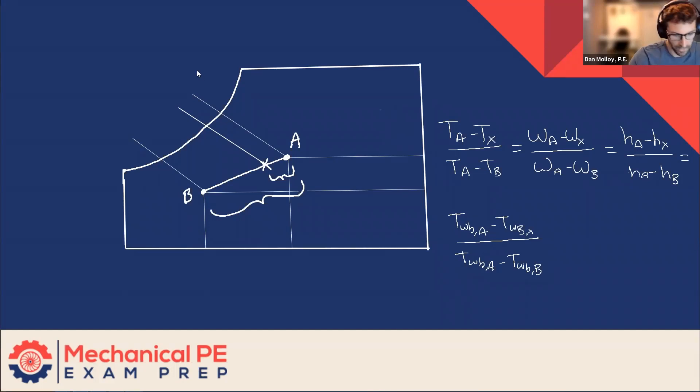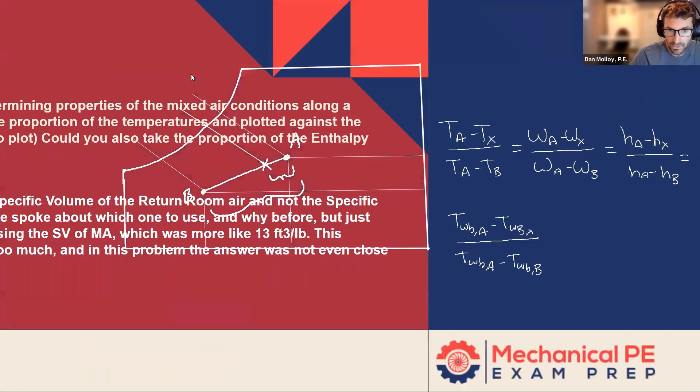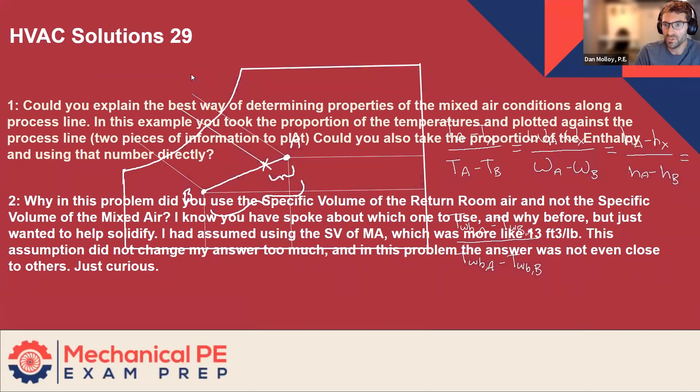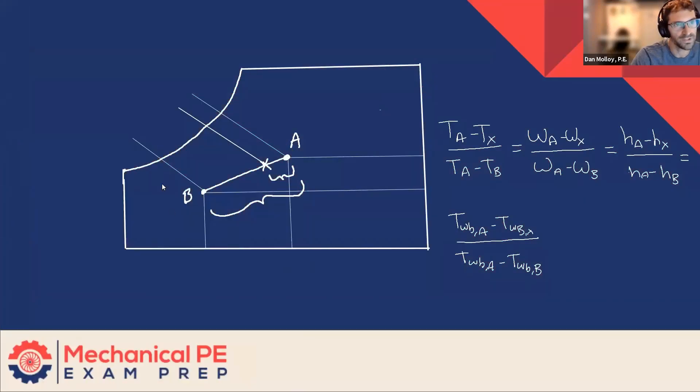And now the second part of the question. Why in this problem did you use the specific volume of the return room air and not the specific volume of the mixed air? I know you've spoke about which one to use and why before, but just wanted to help solidify. I had assumed using the specific volume of mixed air, which was more like 13 cubic feet per pound. This assumption did not change my answer too much. And in the problem, the answer was not close to the others. Just curious. Yeah, good question. And I took a look at this one and it did look like it made more sense to use the mixed air. So I think you took the right approach.